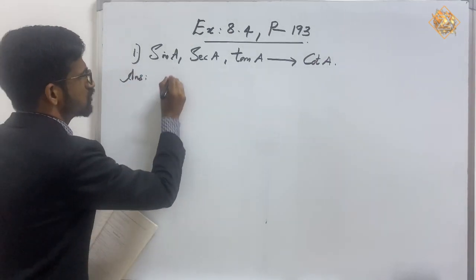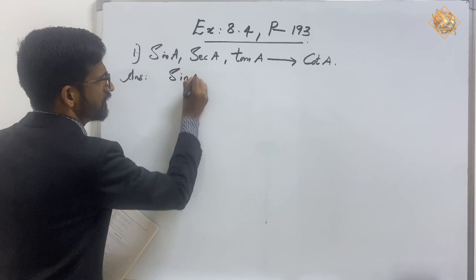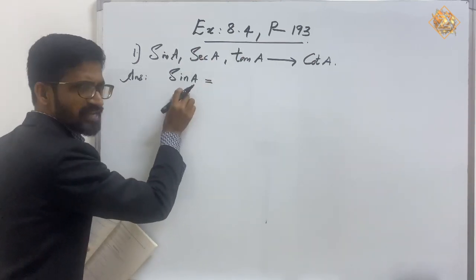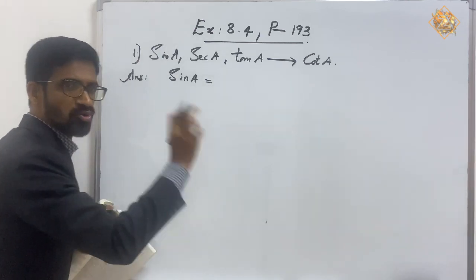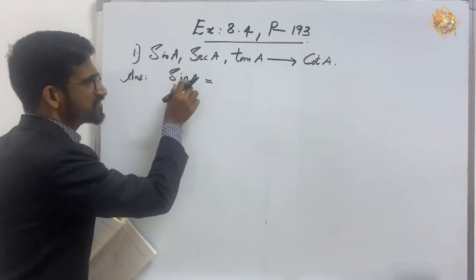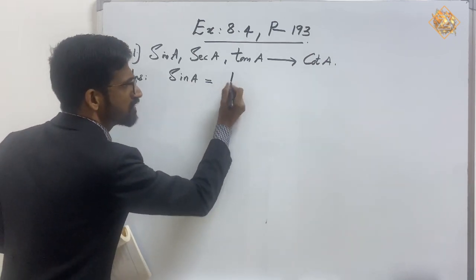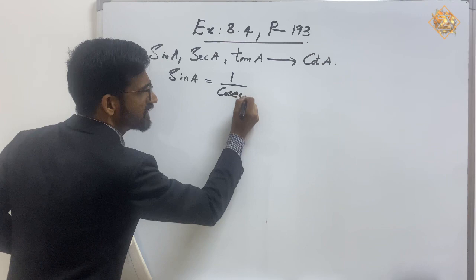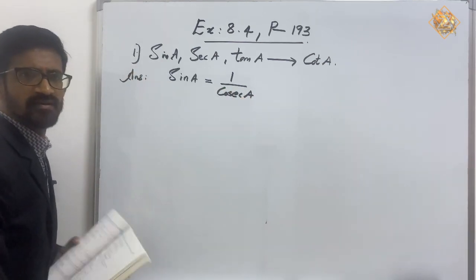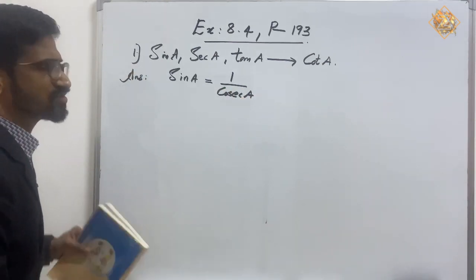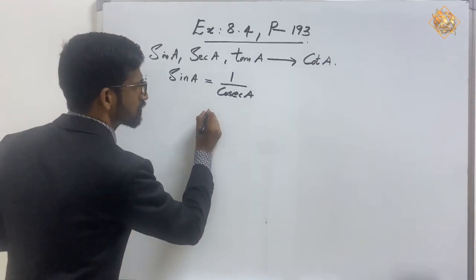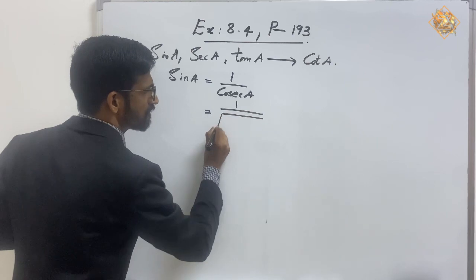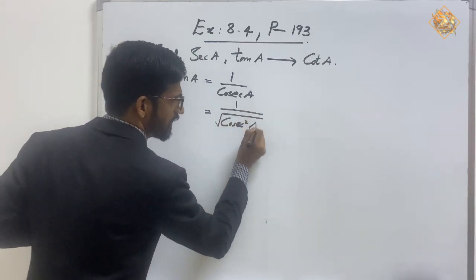The first part is sin A. We have to express sin A in terms of cot A — starting from sin, we have to reach cot. We know sin is the inverse of cosec, so we can write sin A as 1 by cosec A.